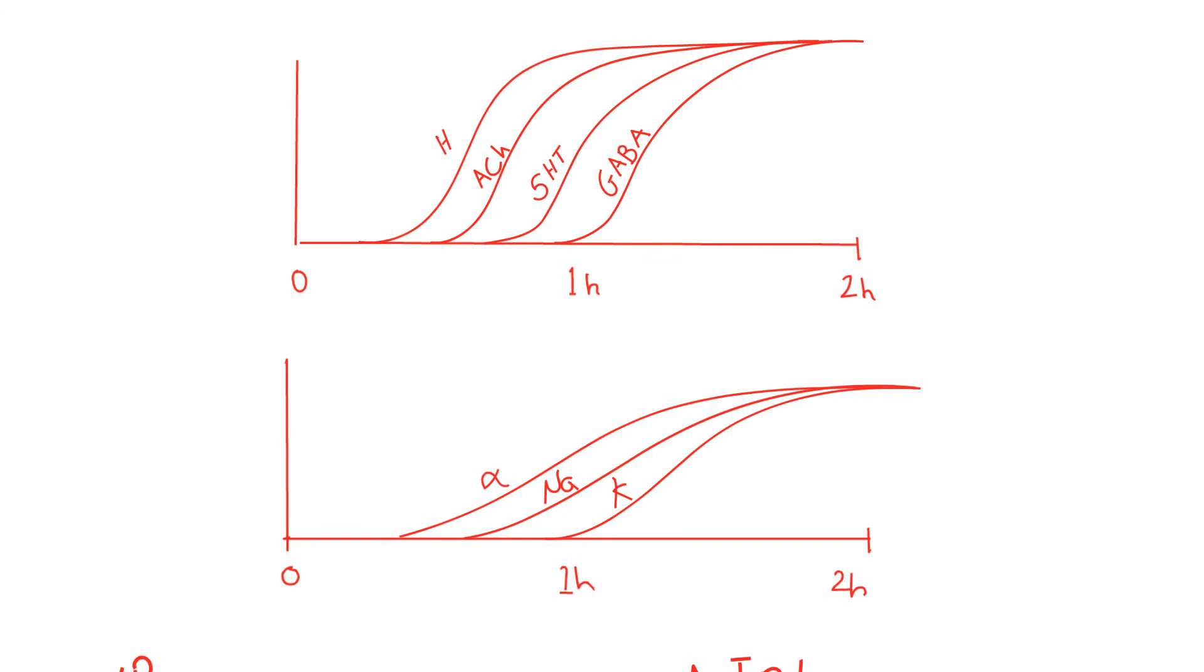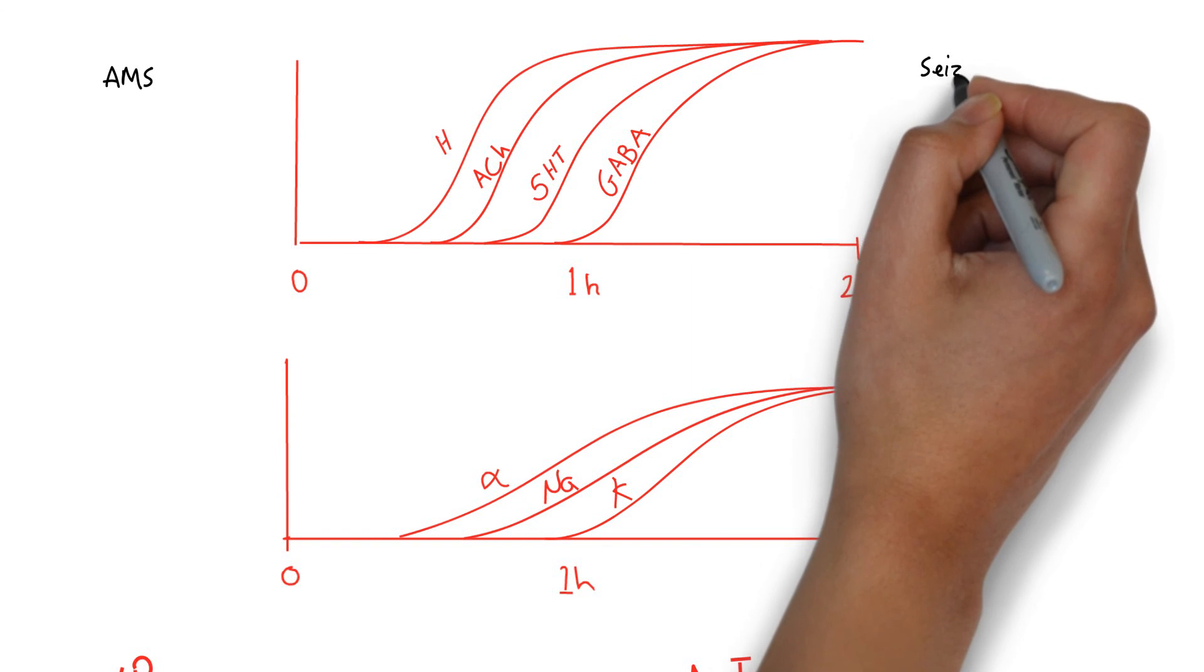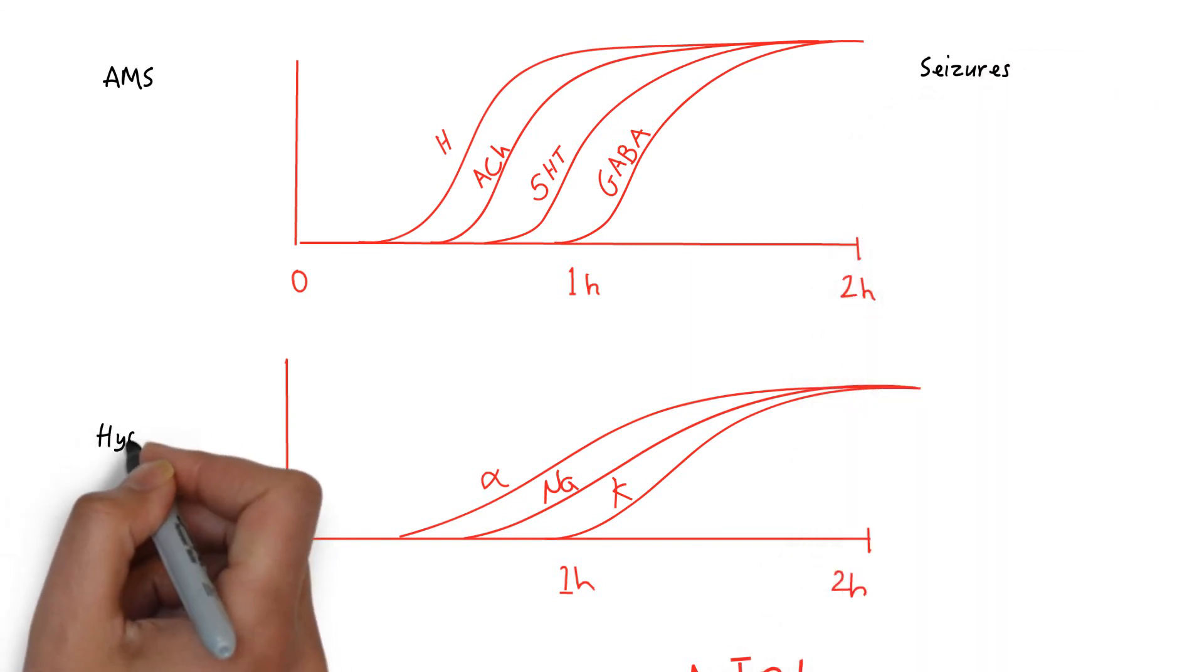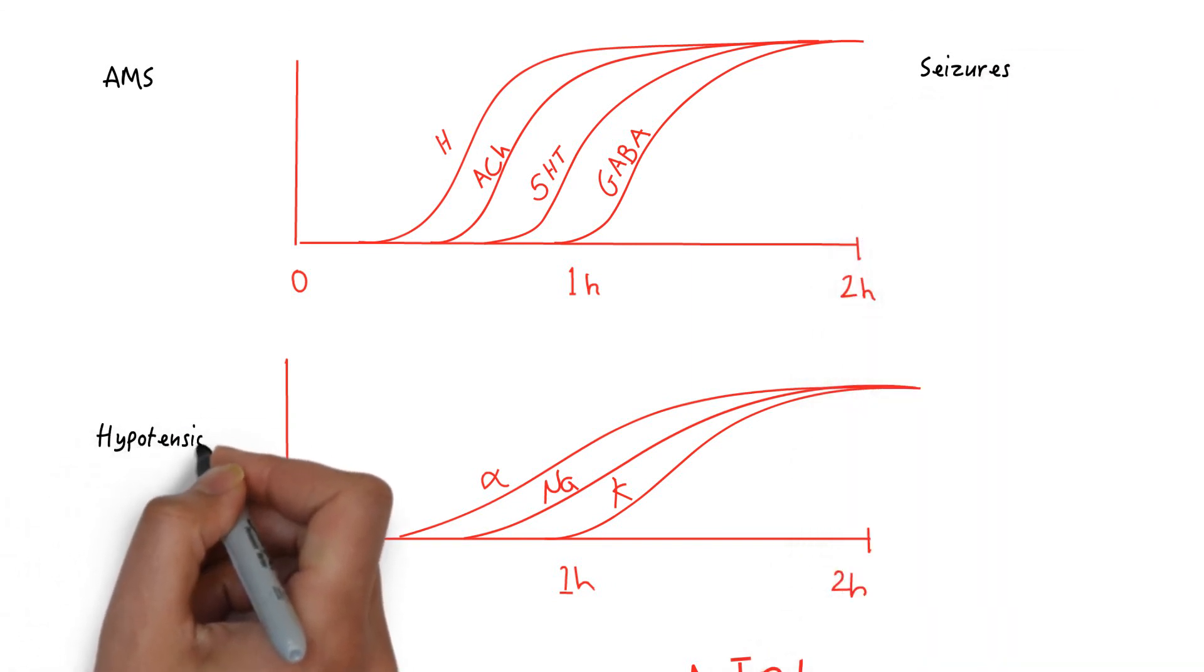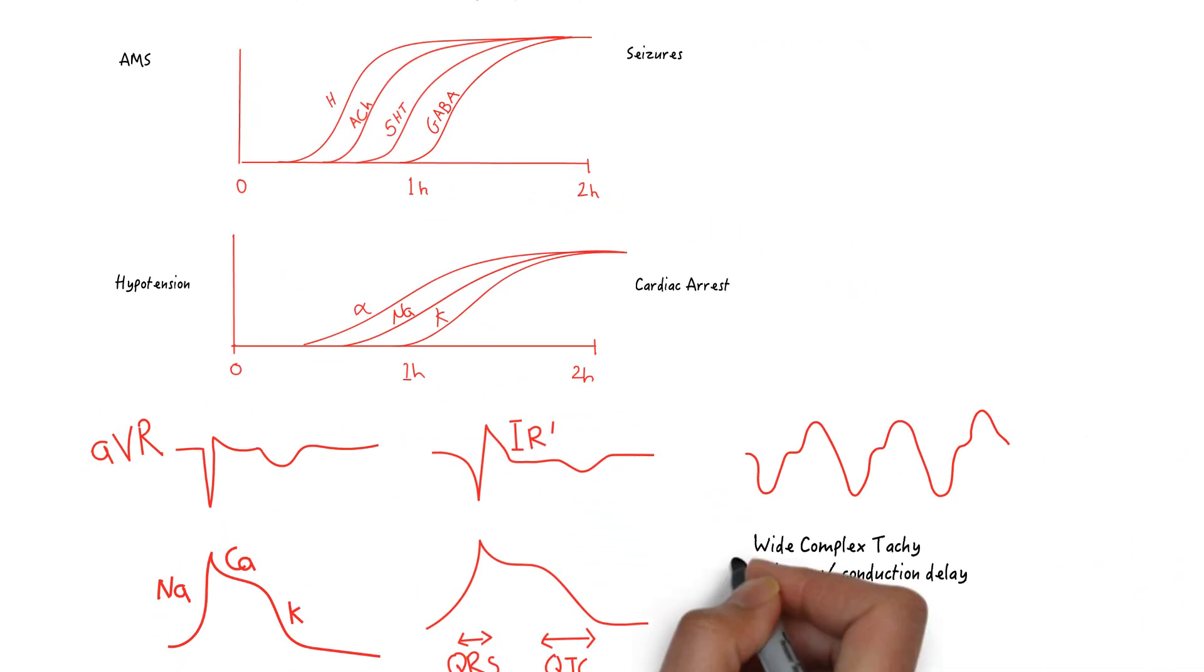All of this can be very scary, especially in the heat of the moment, so let's take a step back and simplify the seven deadly sins. TCA toxidrome is: one, altered mental status; two, seizures; three, hypotension; four, wide complex tachycardia and possibly cardiac arrest. The diagnosis is clinical.